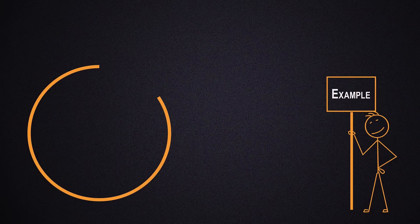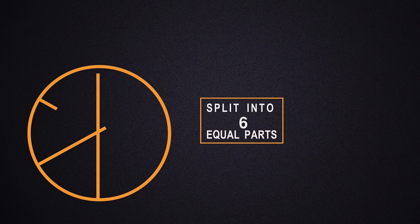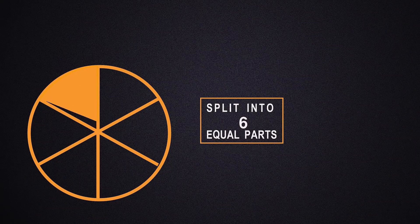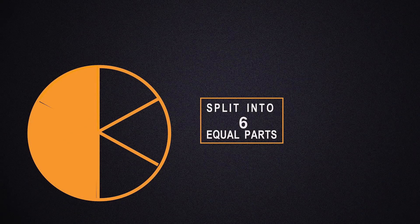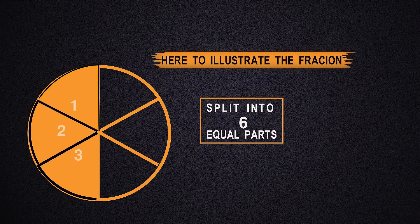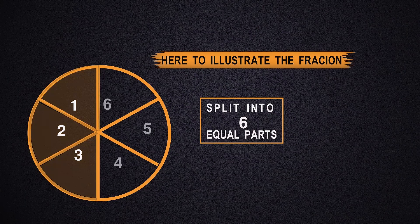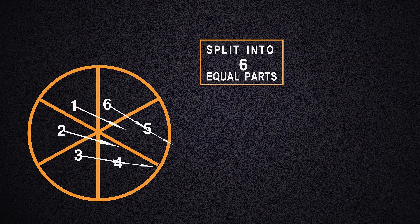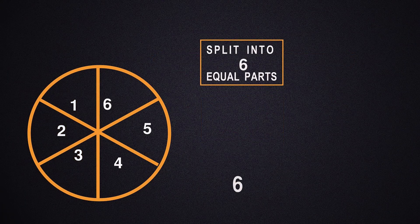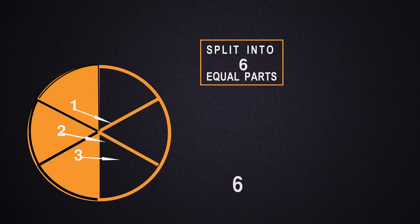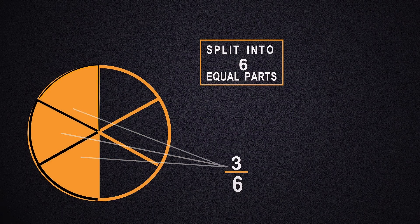Let me give you another example. Suppose I draw a circle and I split that into six equal parts. Now three parts of the circle is shaded. So we know that there are six sections, and the circle is separated into six equivalent parts. And just three of those six sections are shaded. Therefore three-sixths of the circle is shaded.